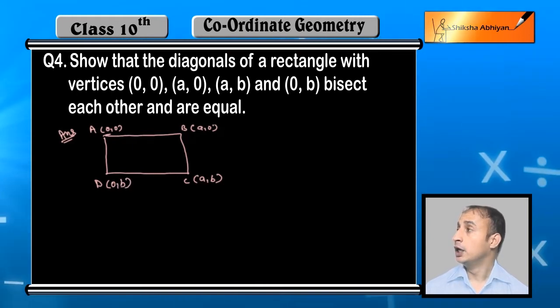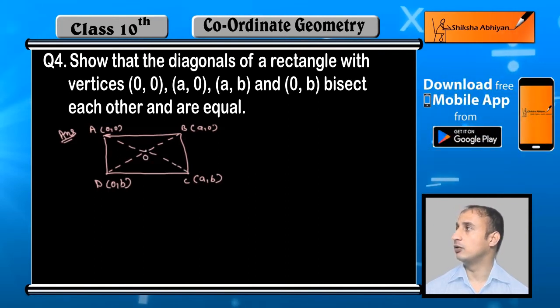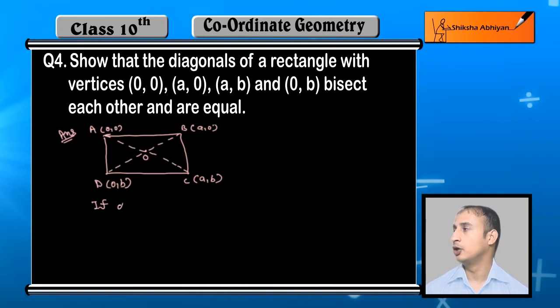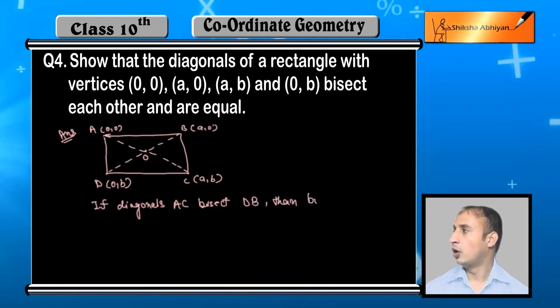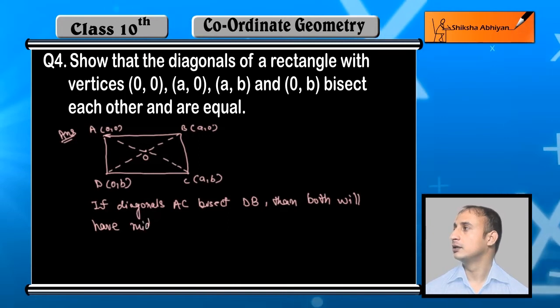Now, if the diagonals bisect each other, then their midpoint will be equal - the same midpoint. If diagonals AC and DB bisect each other, then both will have the same midpoint.